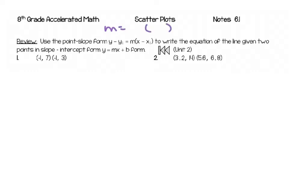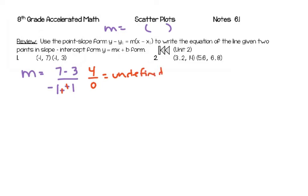If I look at number 1, I don't have a slope — I have two points — so the first thing we need to do is find the slope. Remember, to find the slope you do y minus y over x minus x. That gives us 4 over negative 1 plus 1 equals 0, so that's undefined. If I'm going to write the equation of that line, an undefined slope means a vertical line, and that goes through the x-axis, so x equals negative 1. That's my equation.